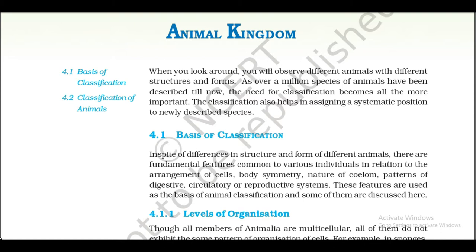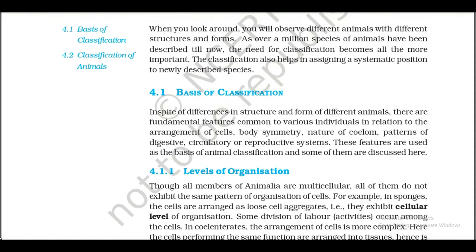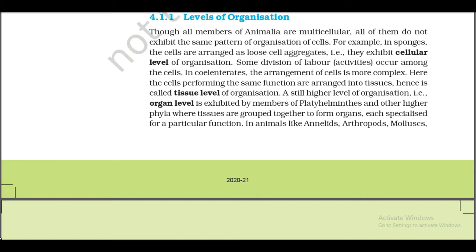4.1 Basis of Classification. In spite of differences in structures and forms of different animals, there are fundamental features common to various individuals in relation to the arrangement of cells, body symmetry, nature of coelom, pattern of digestive, circulatory or reproductive systems. These features are used as the basis of animal classification. 4.1.1 Level of Organization. Although all members of Animalia are multicellular, all of them do not exhibit the same pattern of organization of cells.